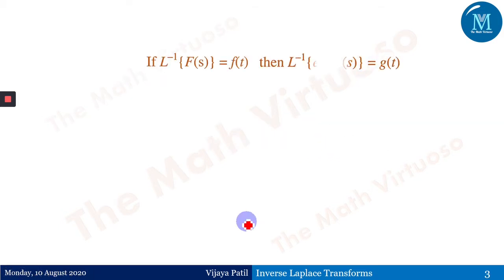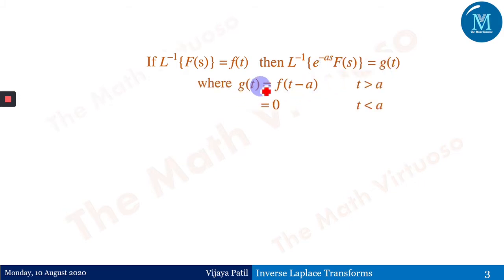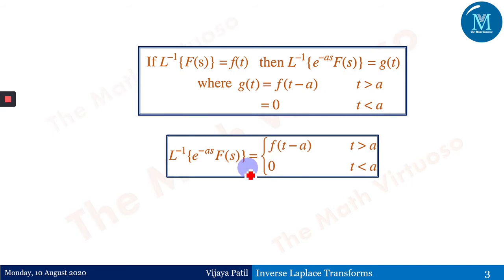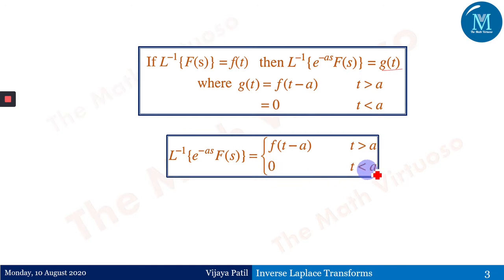The statement goes: if the inverse Laplace of F(s) is f(t), then the inverse Laplace of e^(-as)·F(s) equals g(t), where g(t) is defined as f(t-a) for t greater than a, and 0 for t less than a.